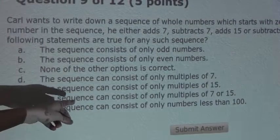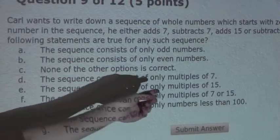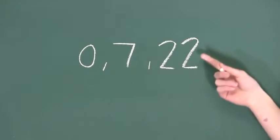Option E. The sequence can consist of only multiples of 15. Again, here 22 is not a multiple of 15, therefore that is wrong.